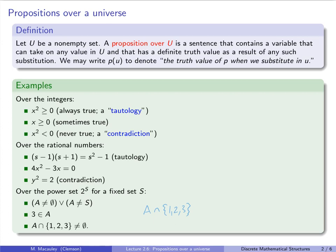I want to add an example of something that is a proposition over one universe but not over a bigger universe. Over the real numbers, I can say x > 0. That's a statement that is either true or false for any real number. However, over the complex numbers, this need not be true or false. It's a technical reason — complex numbers are not well-ordered.